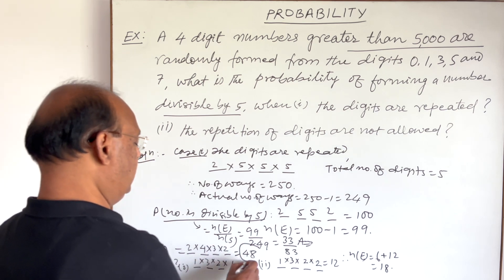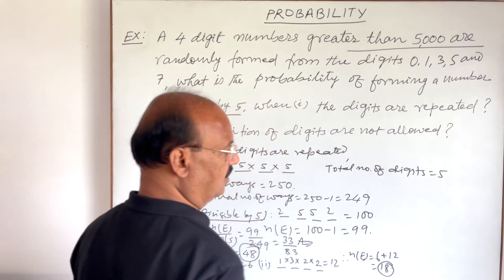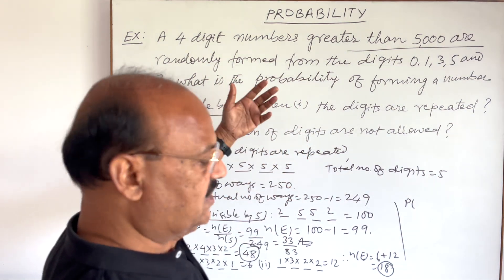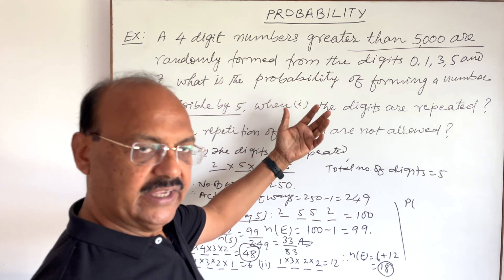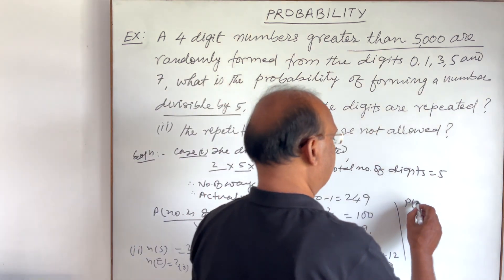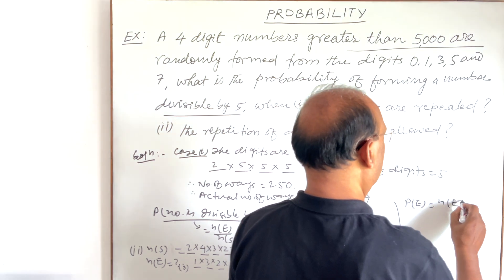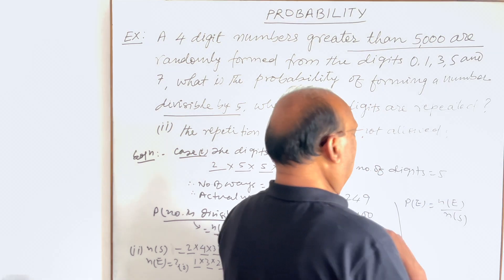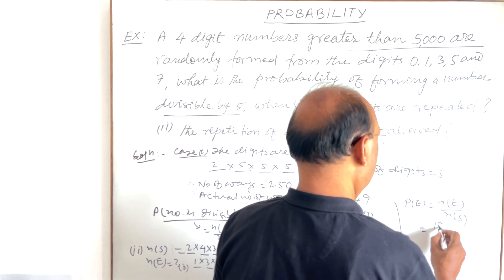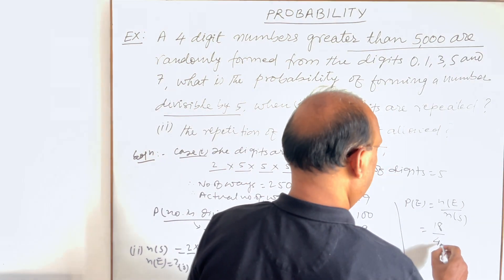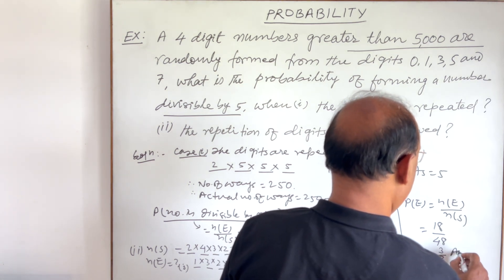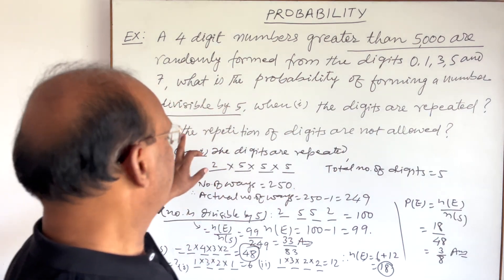With n(E) = 18 and n(S) = 48, the probability of the number being divisible by 5 when digits cannot be repeated is n(E) / n(S) = 18/48 = 3/8. This is the answer for the second case.